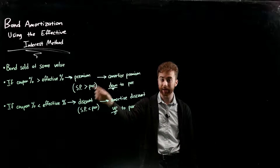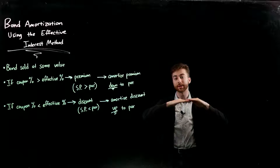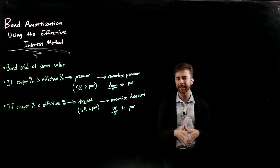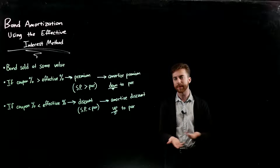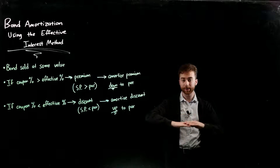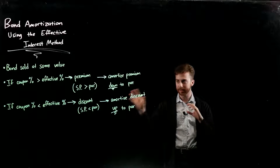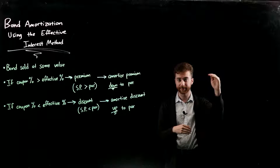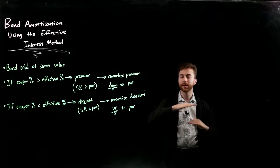So when it's a premium, the selling price is greater than the par value, and you're going to amortize that premium — the difference between your par and what you sold it for — down and down until it equals your par value. On the other hand, if the coupon percent is less than the effective rate, that means it's a discount, because the rate the bond's paying isn't quite as much as what the market would normally pay. In that case, you have to sweeten the deal by making it cheaper to convince people to buy it. So that would be at a discount, where the selling price is less than your par value, and you amortize that discount up and up to your par value.